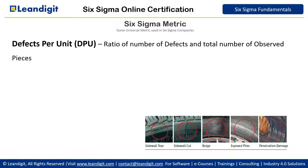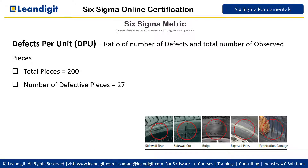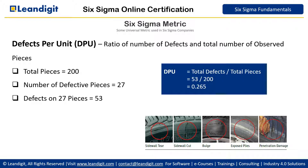What is Defect Per Unit? This metric is related to defects. It is the ratio of number of defects to total number of observed pieces. For example, we have 200 total pieces. The number of defective pieces is 27, and in these 27 defective pieces, we have 53 defects. Therefore, our DPU is total defects (53) divided by total pieces (200), which gives us a DPU of 0.265.